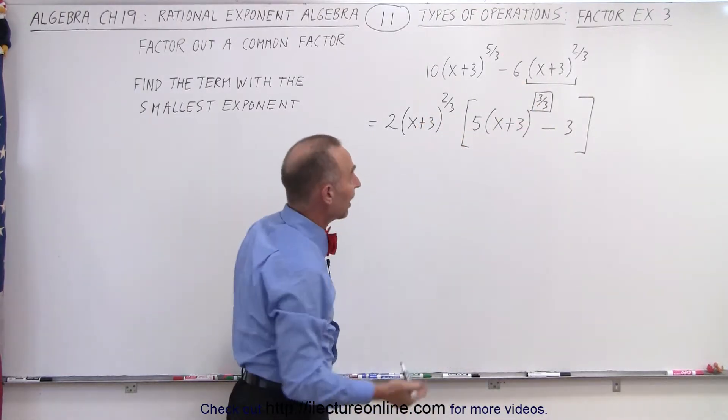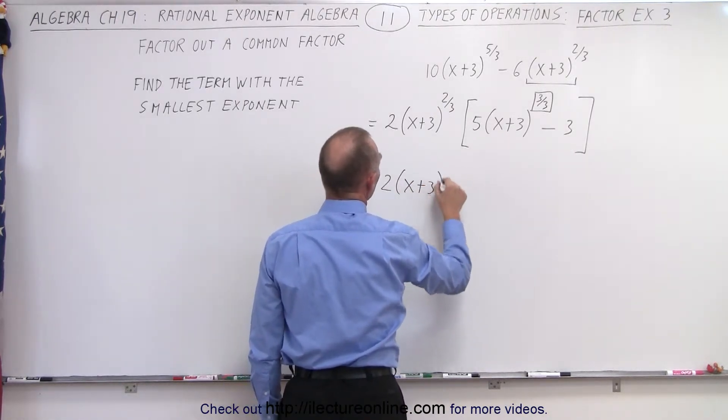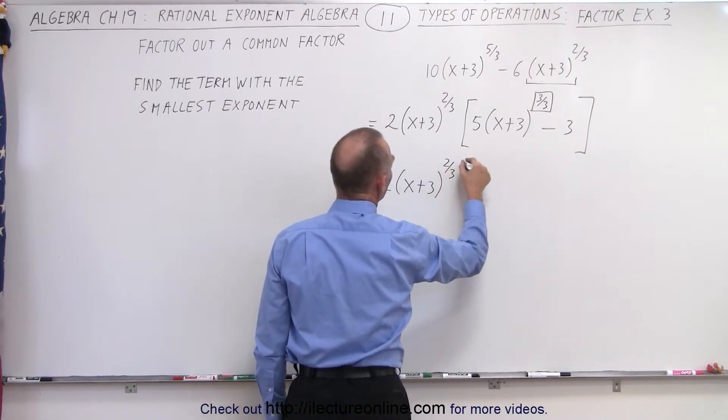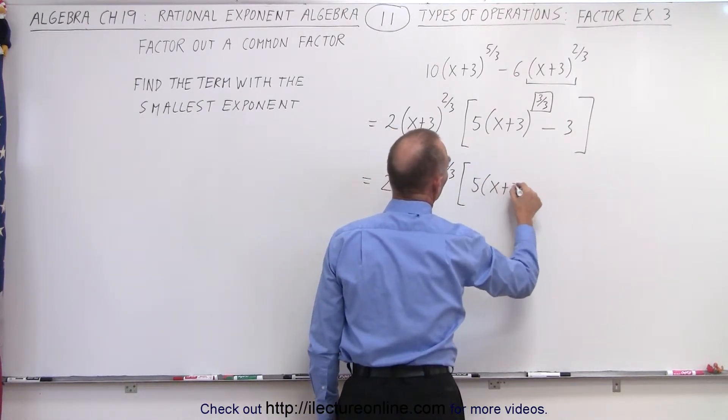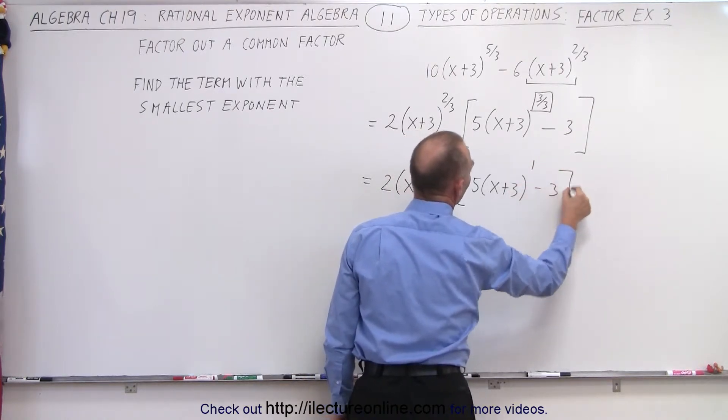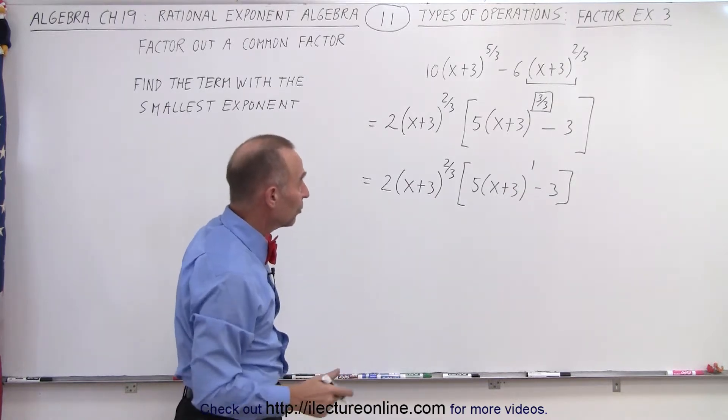Now we need to simplify that, so we get the following: this equals 2(x+3)^(2/3) times 5(x+3)^1 - 3. And since this is to the first power, we can simplify that even further.